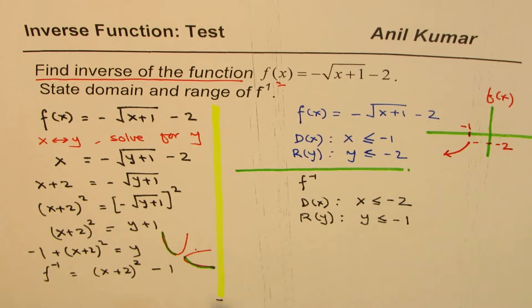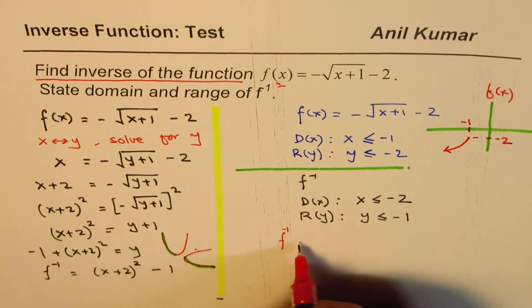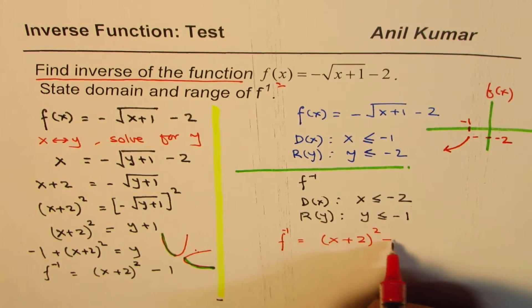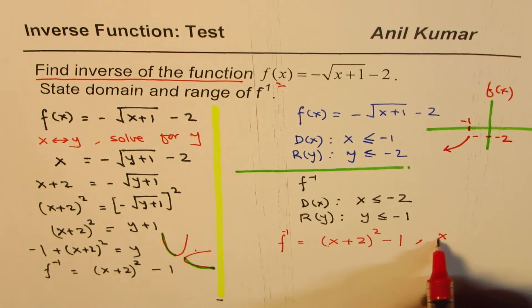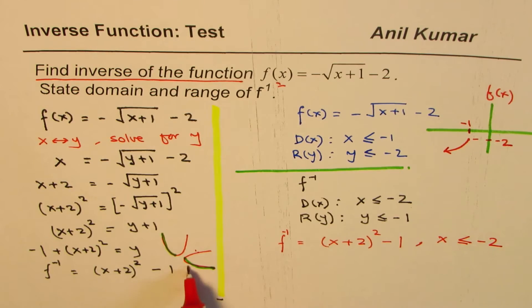So what does that say? That really says that inverse of the function, f inverse, is equals to what you got, x plus 2 whole square minus 1. But in this case, the domain should be restricted. And we have to consider the domain x, which is less than equals to minus 2. So that is the result.